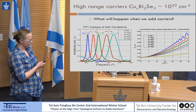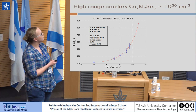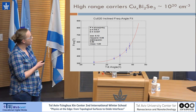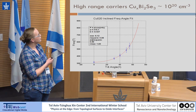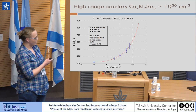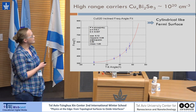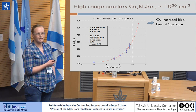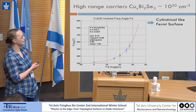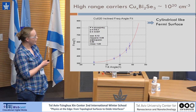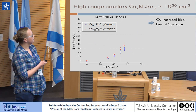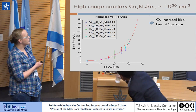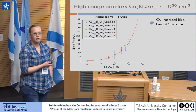When we increased the carrier density further, we found that the frequency scales as one over cosine theta, which means we are measuring the cylindrical scenario — an open Fermi surface. We confirmed this across quite a few samples, and the result repeats itself.